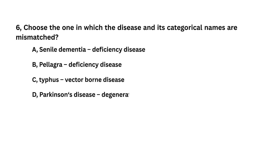Choose the one in which the disease and its categorical names are mismatched: scurvy — deficiency disease; filaria — deficiency disease; typhus — vector-borne disease; Parkinson's disease — degenerative disease.